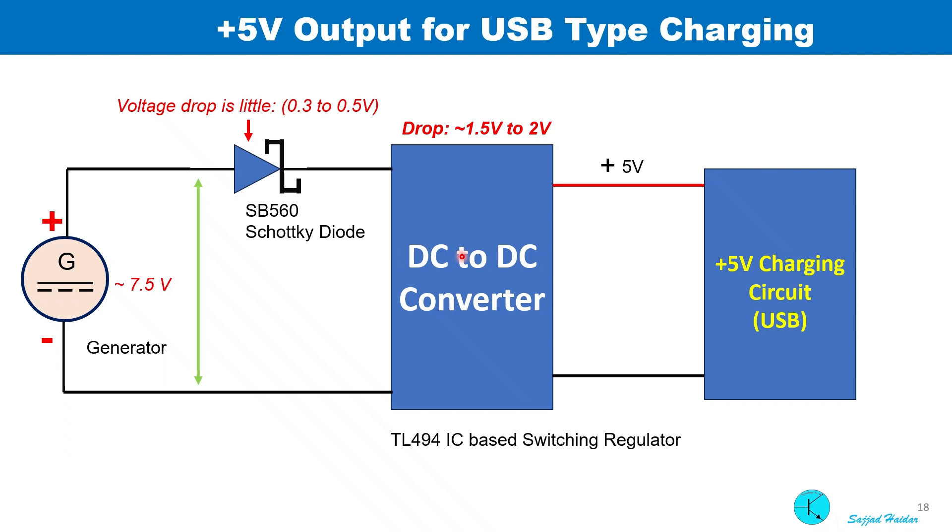Once the DC to DC switching regulator is connected as shown, we have to think of some voltage drop. For instance, this Schottky diode will cause a drop of 0.3 to 0.5 volts depending on the load current. There will be a drop of approximately 1.5 to 2 volts at the DC to DC converter, which also depends on the load current. So at the input we need 7.5 volts to get 5 volts at the output.